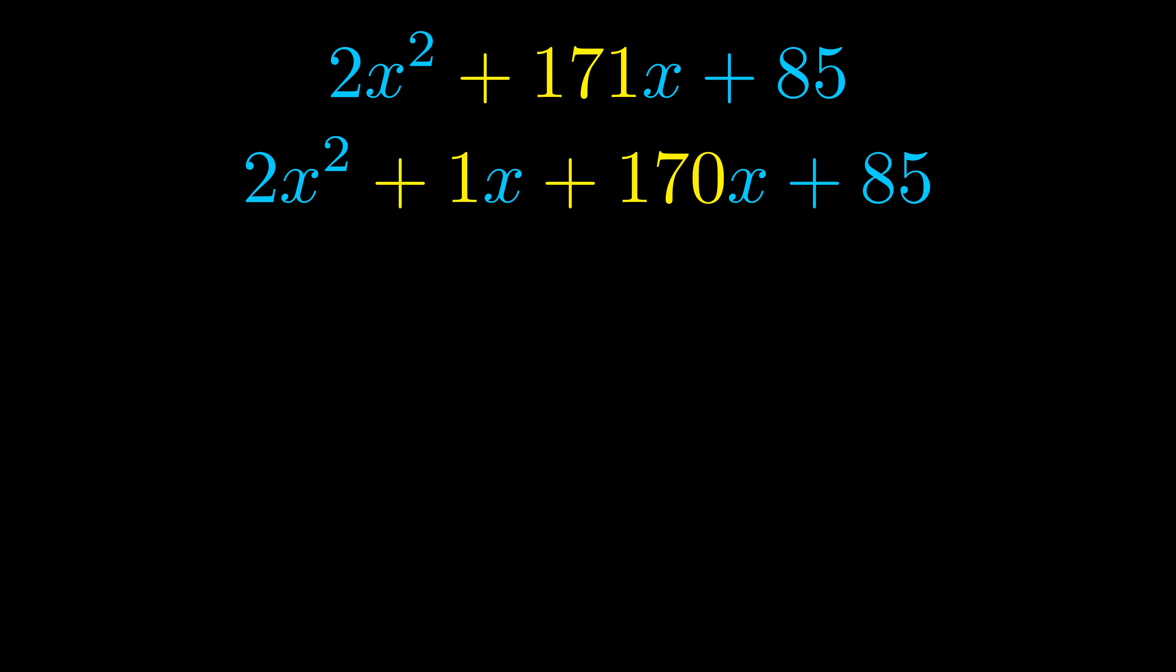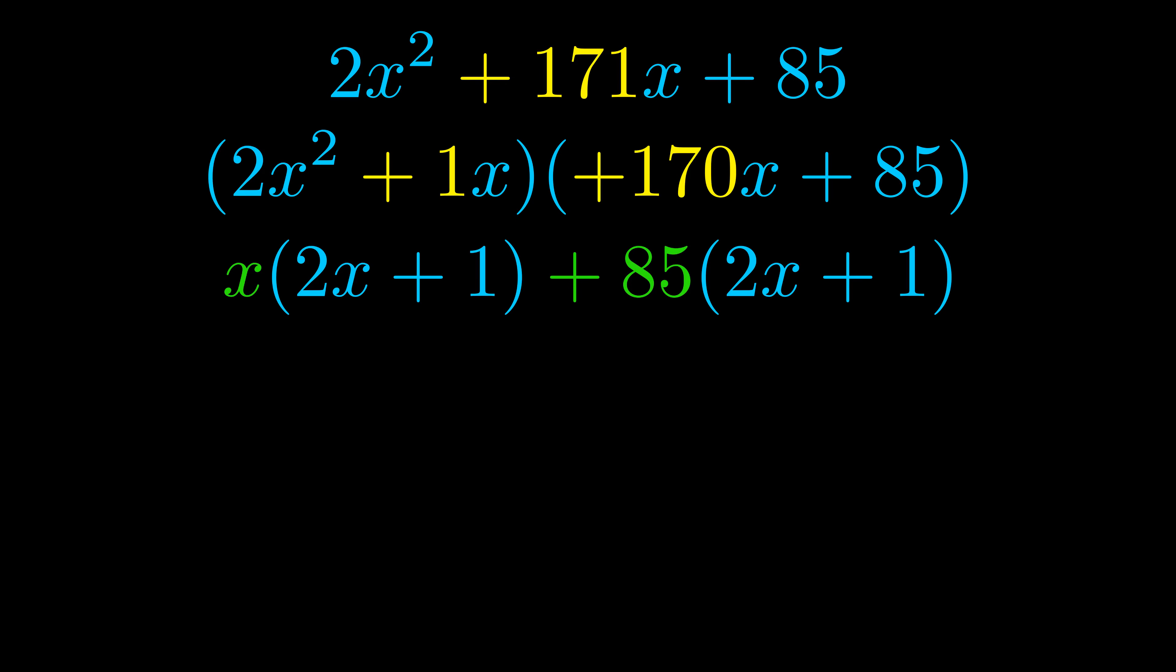Once we've done this we go ahead and we put parentheses around the first term and the last term. And we do that so that we can take the greatest common factor out of both terms. We can see the greatest common factor is now outside in green. Notice also how what remains inside of the parentheses is the same in both cases.